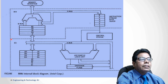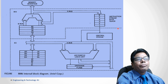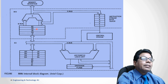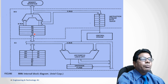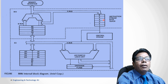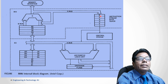In the BIU you can see the segment registers, the instruction pointer, the address adder, and the instruction stream byte queue, which is 6 bytes shown here as positions 1 through 6.